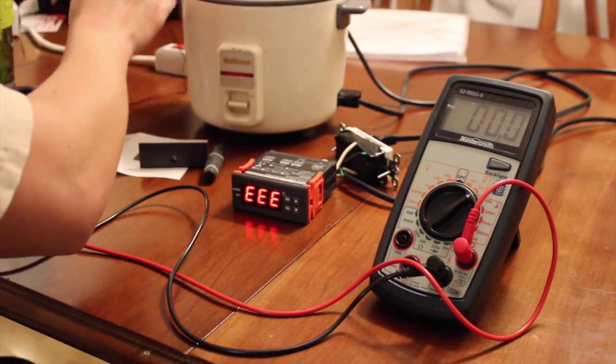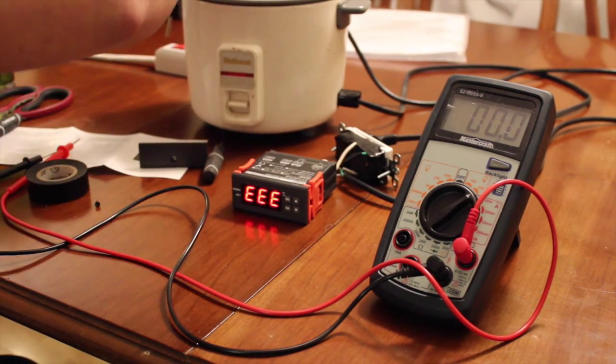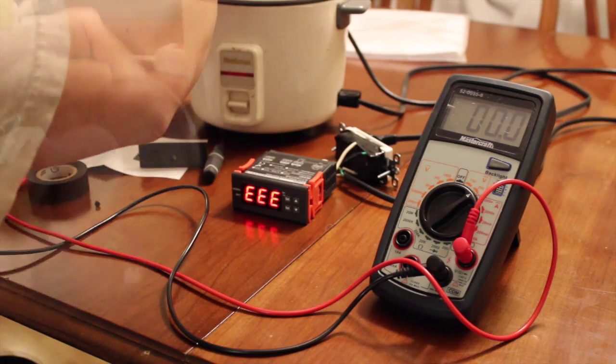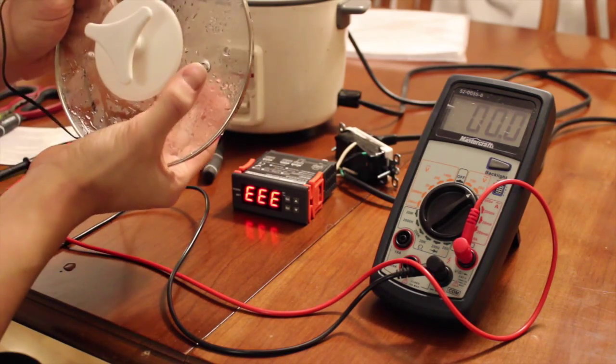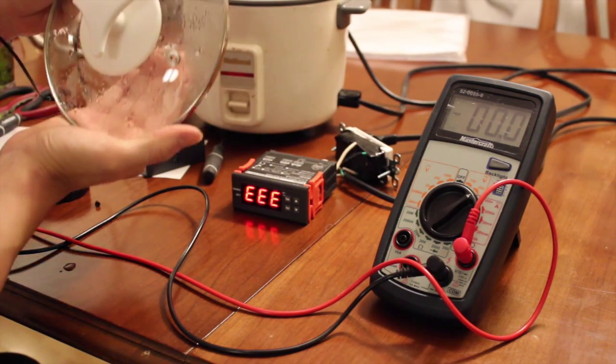One more thing we're going to do is we're going to try to put this probe inside. But to have the cable come out, the rice cooker has a hole that we can put the probe through, and we're going to do that.